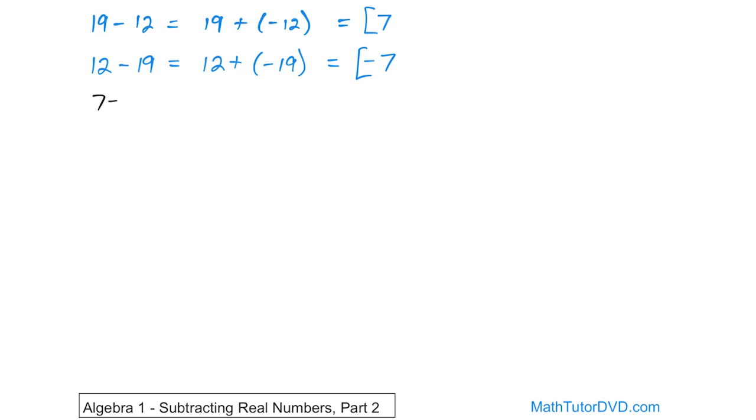What if you have 7 minus 27? Well, the subtraction can be written as adding a negative. So adding a negative 27. So now we're adding a positive and a negative number. So we subtract. 27 minus 7 is going to give you 20, and the sign of the answer stays with the larger absolute value. In this case, the 27 is larger. So we get negative 20.